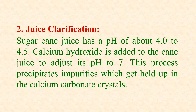The next step is juice clarification. Sugarcane juice obtained after the extraction process contains many impurities, and thus the juice must be clarified in order to remove all the impurities. Sugarcane juice has a pH of about 4 to 4.5. Calcium hydroxide, also known as milk of lime or lime suspension, is added to the cane juice to adjust its pH up to 7. This process precipitates impurities which get held up in the calcium carbonate crystals.